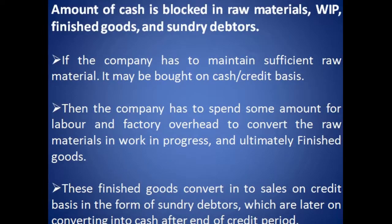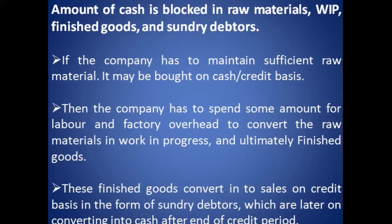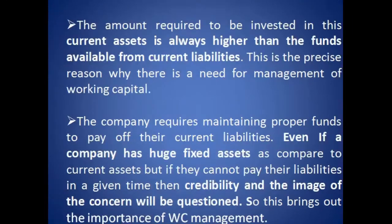Work in progress is nothing but raw material plus some amount spent on labor and overheads. Finished goods are complete in all respects — that is, raw material 100%, labor 100%, and overheads 100% are spent on them.